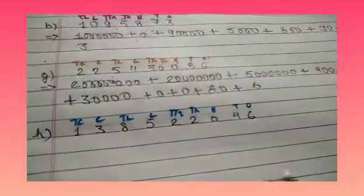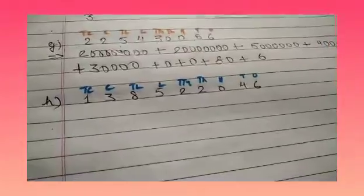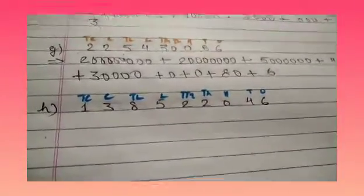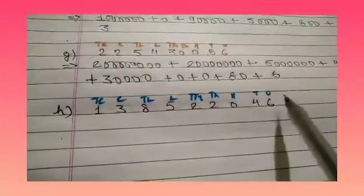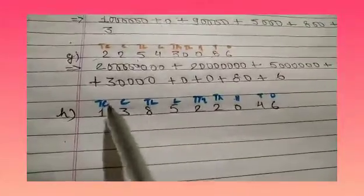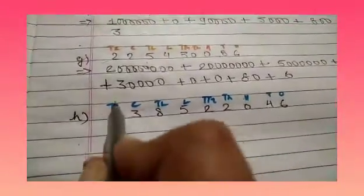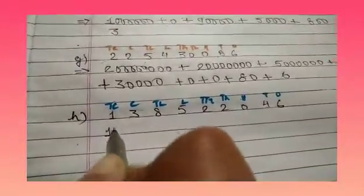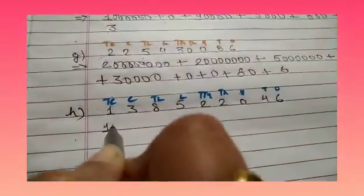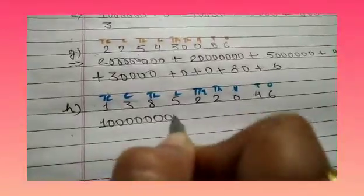Now copy down H part. H part is 1385220046. We have written the place value: 1, 10, 100, 1000, 10,000, 1 lakh, 10 lakhs, 1 crore, and 10 crores. So 1 is at the 10 crores position — 10 crores has 8 zeros: 1, 2, 3, 4, 5, 6, 7 and 8.